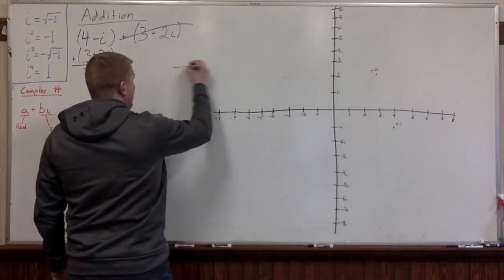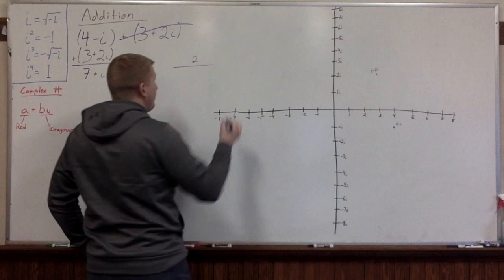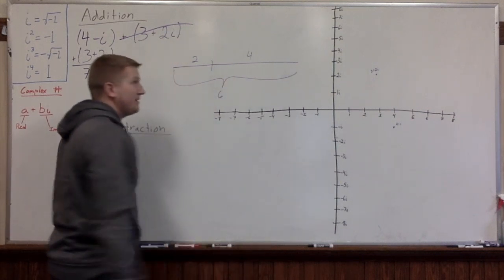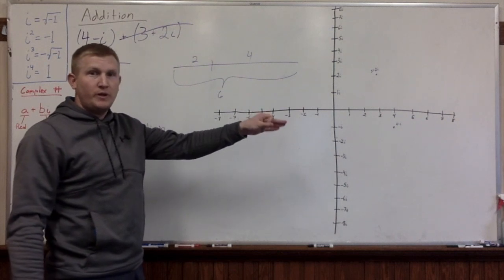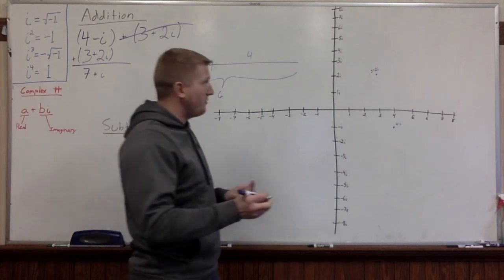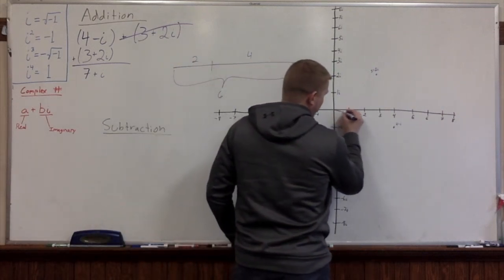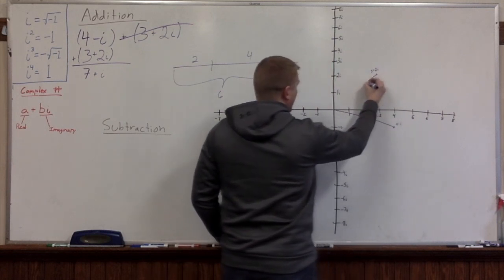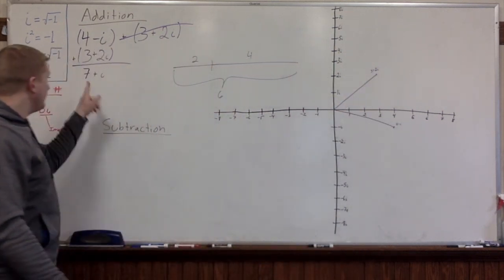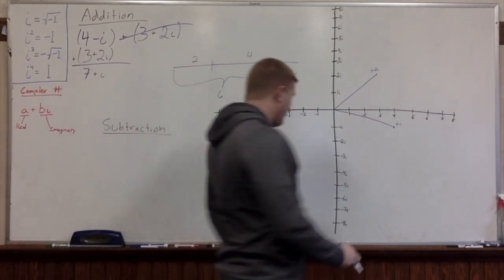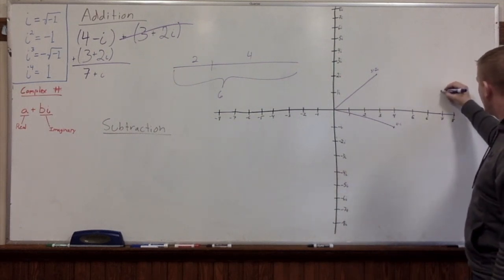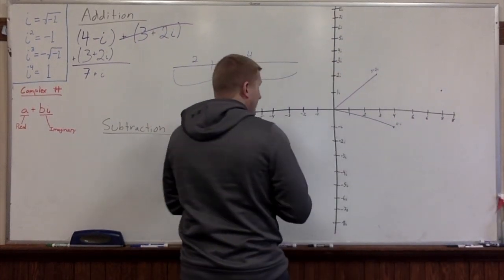With one-dimensional numbers we might add a stick of 2 units to a stick of 4 units and get 6 — but that's not what we're doing here, because these are two-dimensional numbers. They have distance and direction. We're going to add this distance and direction to this other distance and direction, and what we end up getting is 7 plus i. So at 7, we go up 1i, and that red line represents our sum.